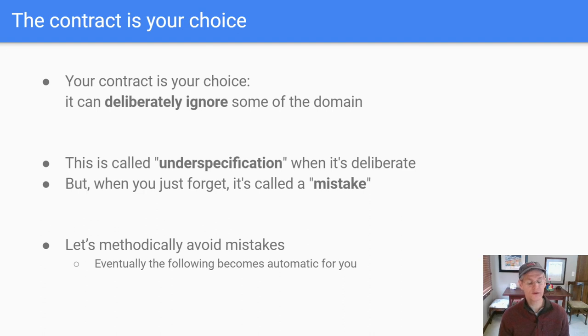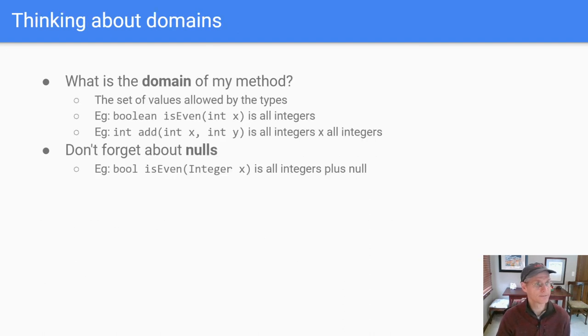And what I've noticed is that once you become used to thinking about contracts in your code and evaluating their domains and the ranges of each one of these things, this kind of methodical thinking actually becomes second nature and it happens instantly.